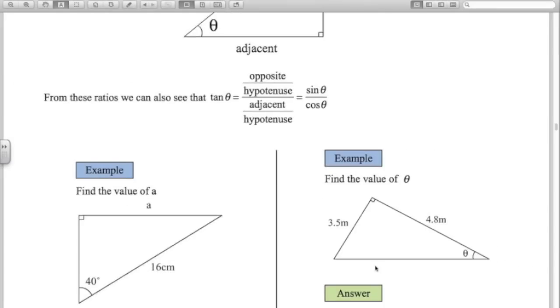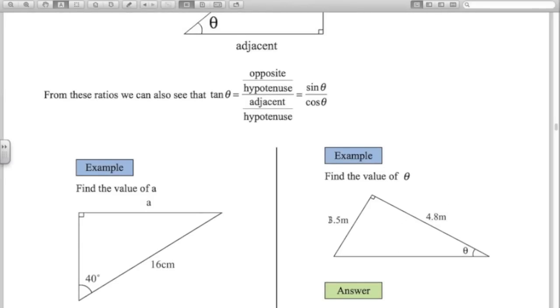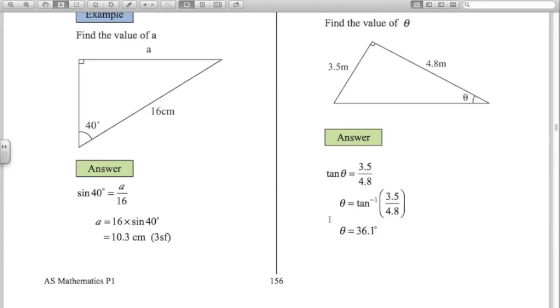So here's two right angle triangles to solve. In the first one we have to find the length of A. In the second one we have to find the size of the angle. So in the first one we've just got to choose the right identity. In relation to this angle we've got the opposite and a hypotenuse. So O and H means that we've got to be using the sine of 40 here. Sine of 40 equals A over 16. Over here we've got the opposite side and we've got the adjacent side. O and A means we're going to be using tan for this one here. Tan of theta equals 3.5 divided by 4.8. There's your first steps and you can solve from there getting those two answers.